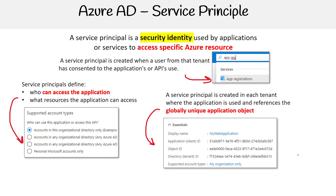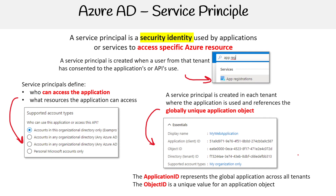After you've registered your application, you're going to have an Object ID and an Application ID. The Application ID represents the global application across all tenants, while the Object ID is a unique value for an application object within a specific tenant.